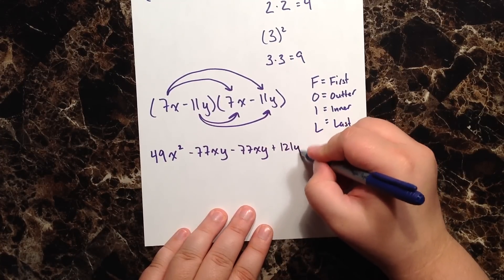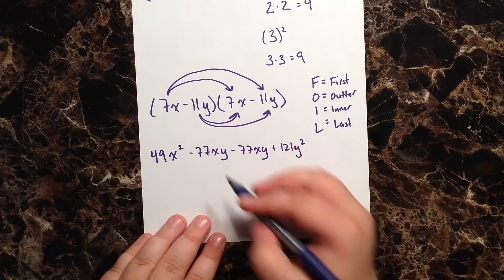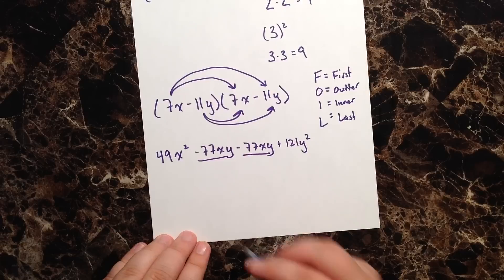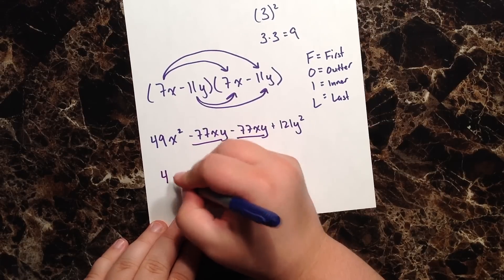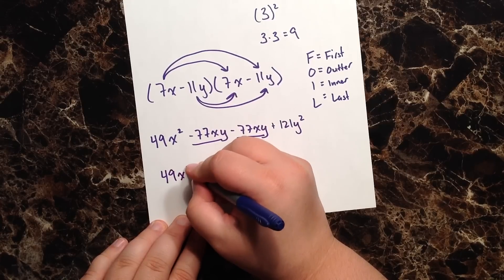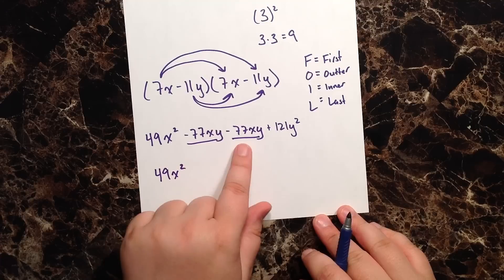Now I have like terms I can combine. Let's go ahead and rewrite this expression. So we have 49x², well -77 and -77 is -154.